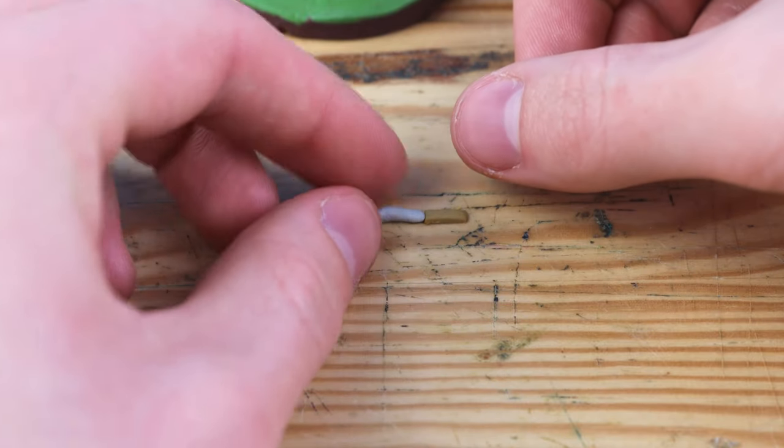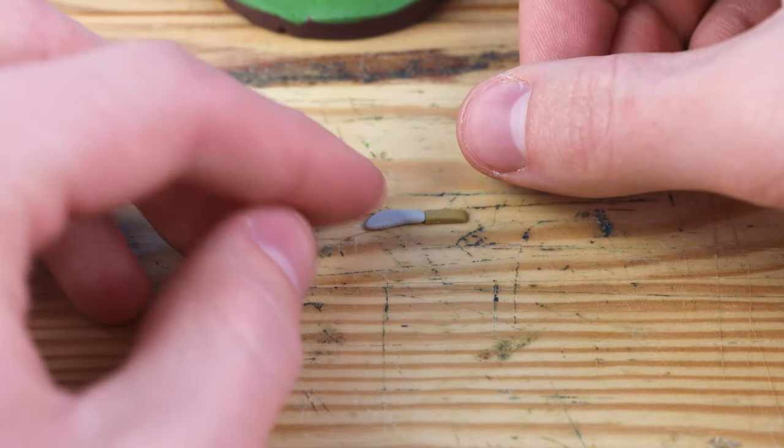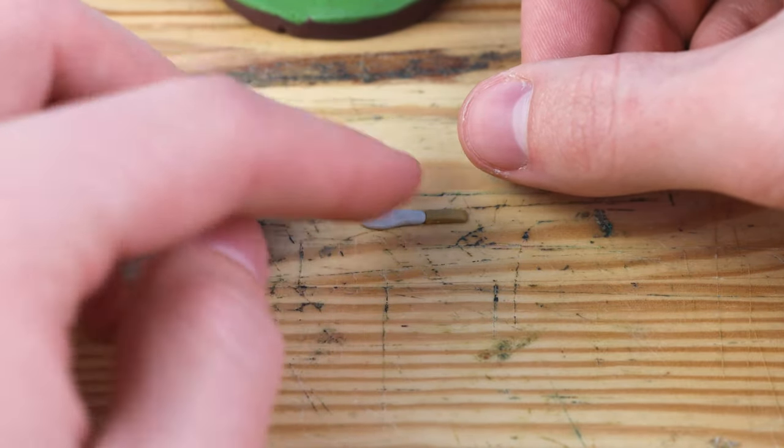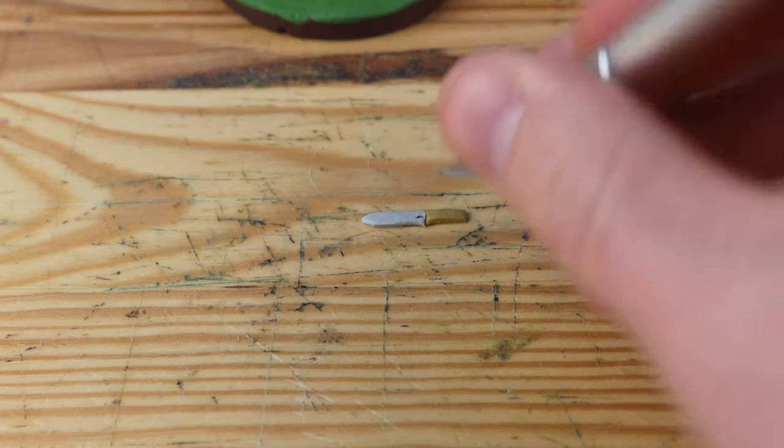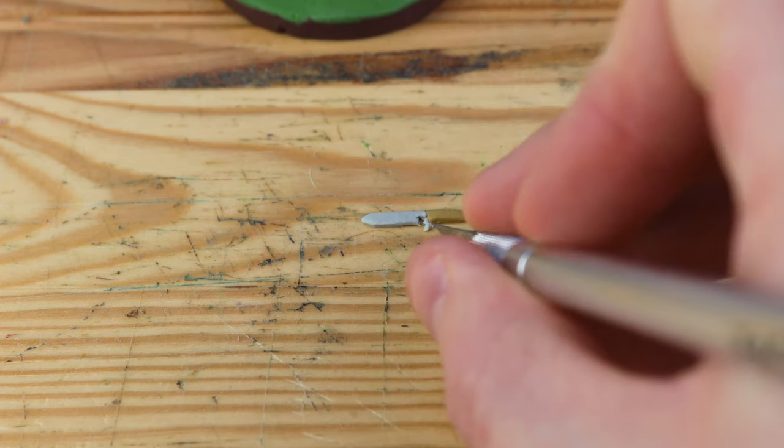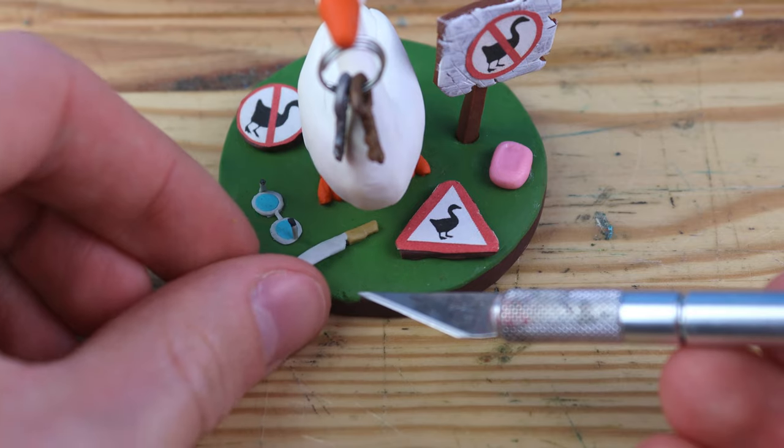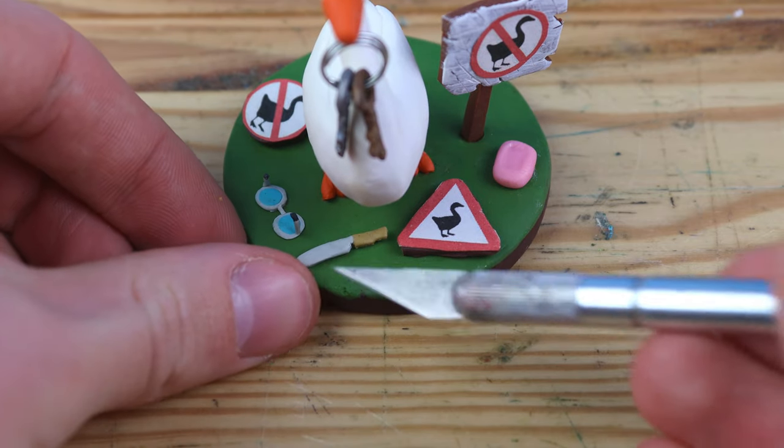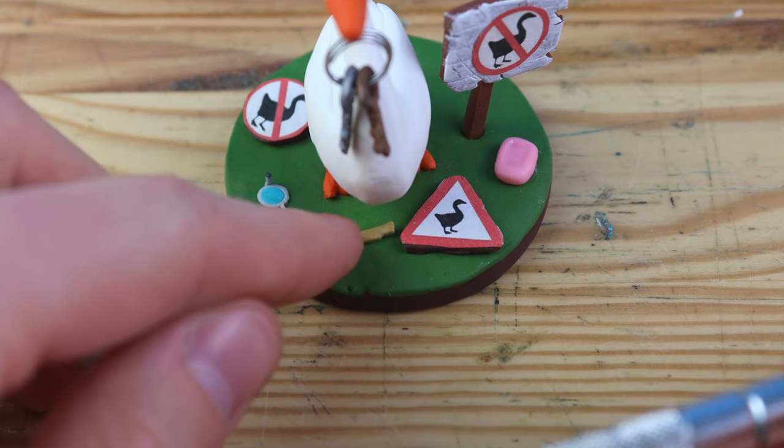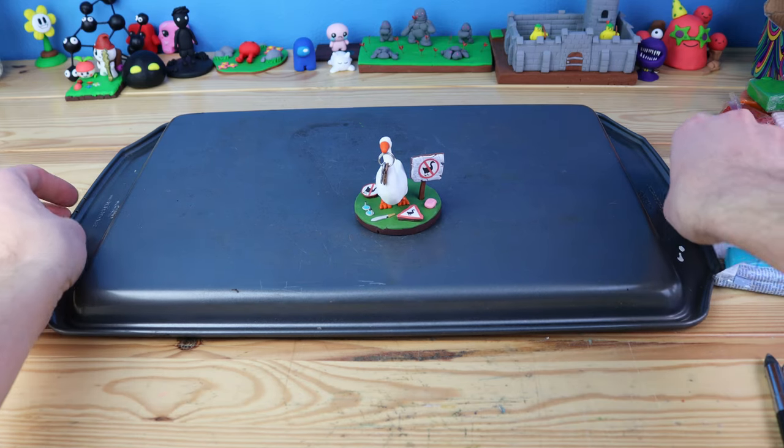The next and final item I want to create is a knife, possibly one of the most iconic things that the goose can pick up. After getting it into the shape I wanted, I trim the handle down just a little bit. We can get that onto the base, and now we are ready to get baked.